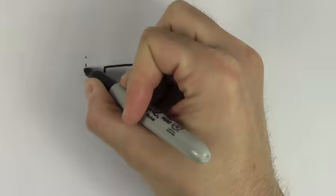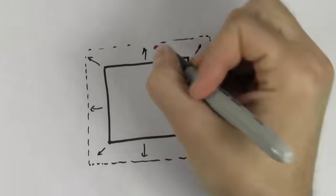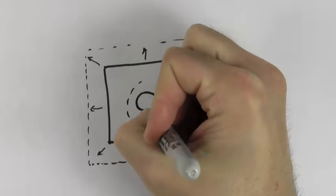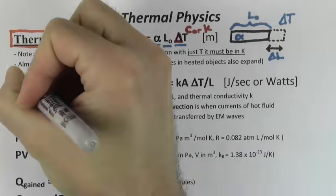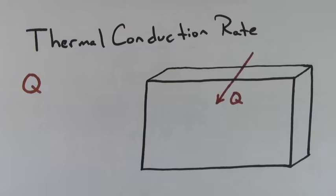If the object was two-dimensional, it would expand in all directions by the same proportion. Even holes in the object would expand.